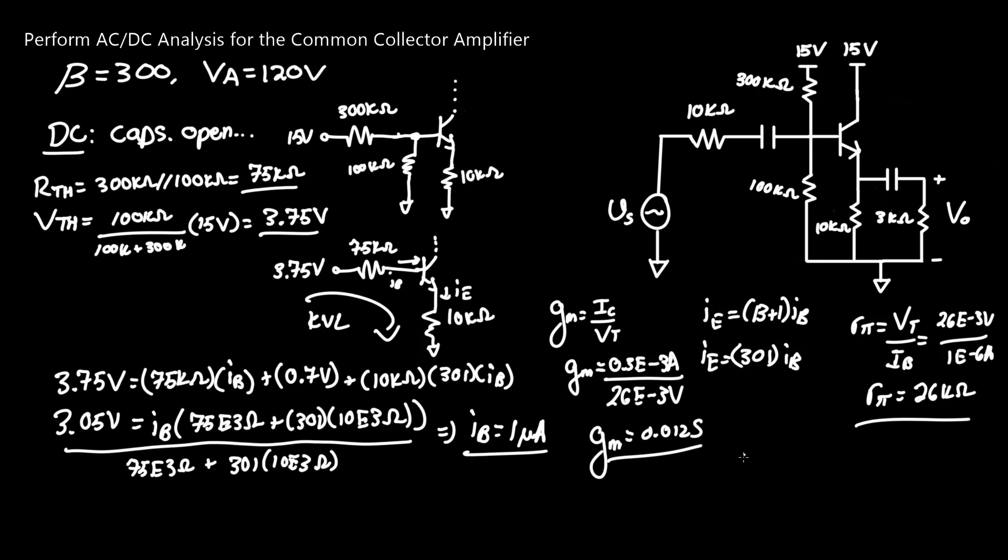Last but not least, we have RO, which is early voltage VA over IC. That is given to be 120 volts over IC, which was 300 milliamps, or 0.3E negative 3 amps. RO ends up equaling 400 kilo ohms. This is everything we need to do for DC analysis. Now we can move on to AC analysis.